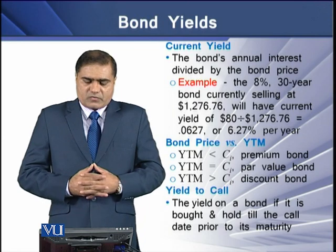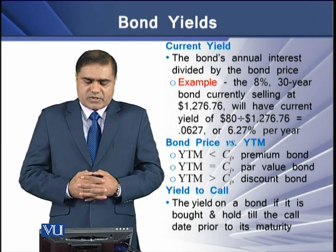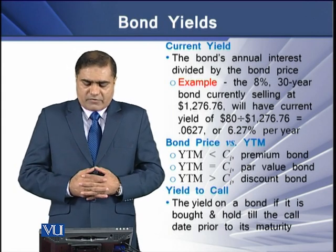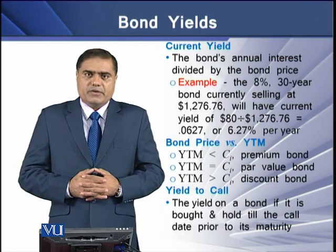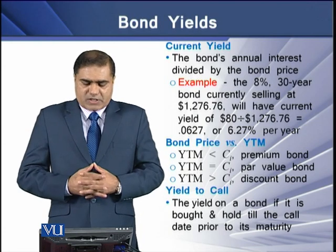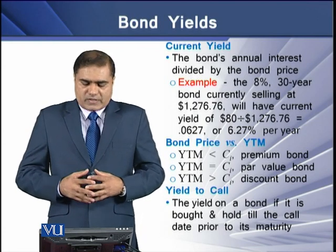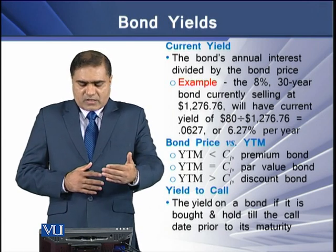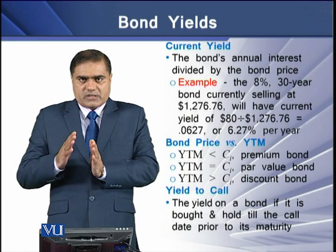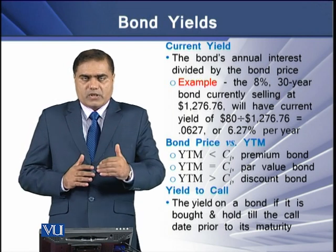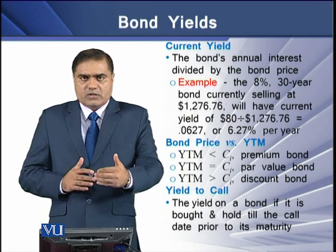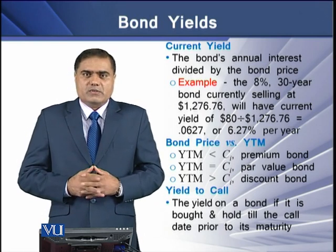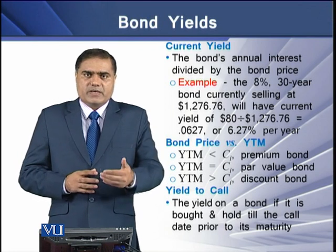By current yield we mean the bond's annual interest payments divided by its current price. For example, for an 8%, 30-year bond currently selling at $1,276.76, we divide the annual coupon of $80 by the current price. The resulting figure of 6.27% is termed as the current yield.